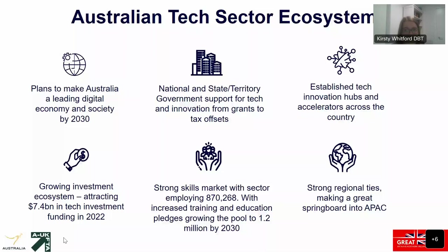We have a growing investment ecosystem — Australia attracted $7.4 billion in tech investment funding in 2022, and we're seeing continued government and private investment in deep tech. Just this week, Main Sequence Ventures raised $450 million Australian dollars to invest further in deep tech funds. Like the UK, Australia is growing its tech skills market — currently ranked sixth in the world for digital skills required to support tech innovation. The tech industry employs about 870,000 people, with pledges to grow that labour pool to about 1.2 million by 2030.